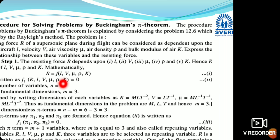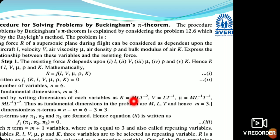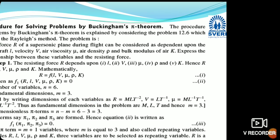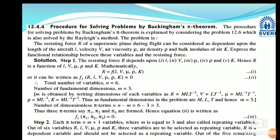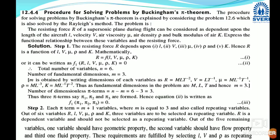The fundamental dimensions of R are MLT⁻². Since all variables require M, L, T to be expressed, m = 3. Therefore the number of dimensionless pi groups = n − m = 6 − 3 = 3. We name them π1, π2, and π3, so f(π1, π2, π3) = 0.